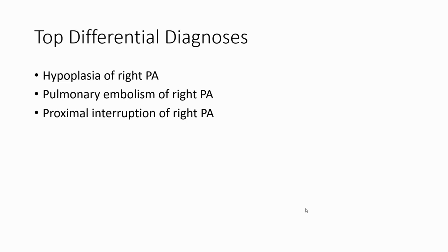Differential diagnosis of pulmonary stenosis: The first consideration is hypoplasia of the pulmonary artery, second is pulmonary embolism, and third is proximal interruption of the pulmonary artery.